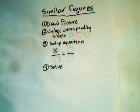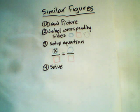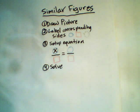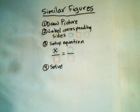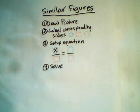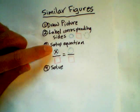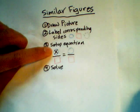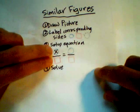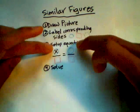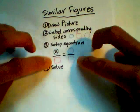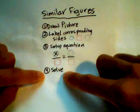Today we're going to be dealing with similar figures. When we're dealing with similar figures, here's our plan. We're going to first make sure we have a picture. Next, using the congruency of angles, we're going to label which sides are corresponding. Then we're going to set up our equation with our variable we're trying to solve, with one shape on the left and one shape on the right, with corresponding sides matching top to bottom. And then we're going to solve it.